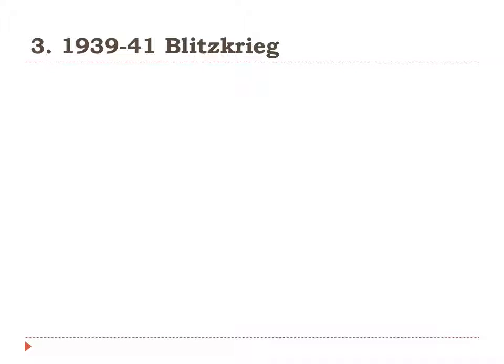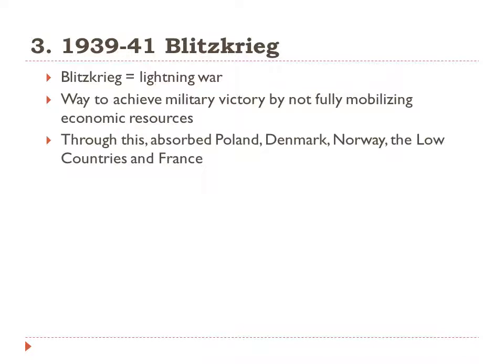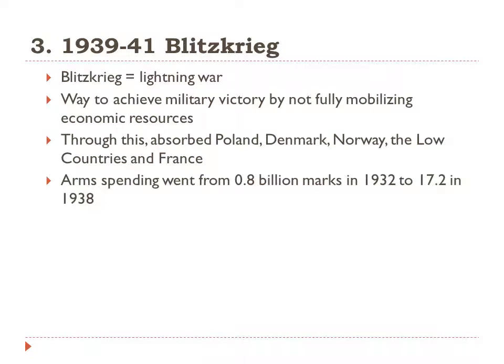The third stage runs from 1939 to 1941, after World War II had begun, when Germany's warfighting strategy was the Blitzkrieg — lightning war. The purpose of Blitzkrieg was to achieve military victory without fully mobilizing the economic resources: strike hard, strike fast, and win without going into total war. With this strategy, Germany was able to absorb Poland, Denmark, Norway, the Low Countries, and France. Arms spending went from 0.8 billion marks in 1932 to 17.2 billion marks in 1938, enabling this approach.